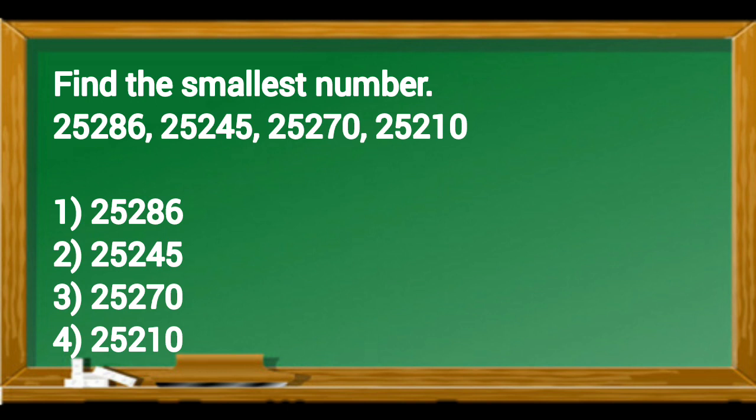Find the smallest number. In this sum 25,286, 25,245, 25,270, 25,210 numbers are given. Among them number 25,210 is smallest. So option 4 is the correct option.